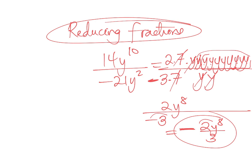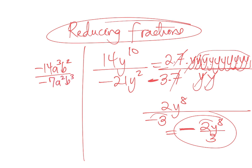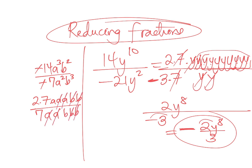Final example: −14a³b² ÷ (−7a²b³). The two negatives cancel immediately. 14 = 2×7; the 7s cancel. Two a's cancel (one a remains in numerator), and two b's cancel (one b remains in denominator). The answer is 2a/b.